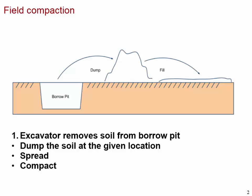Borrow pit. When we do field compaction, we need soil to compact. We can use the soil already in place, or we can borrow soil from another location. The place where we borrow the soil is called a borrow pit.